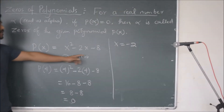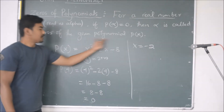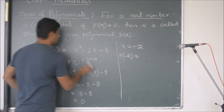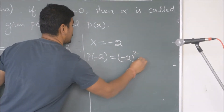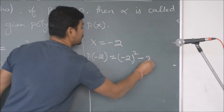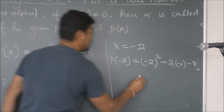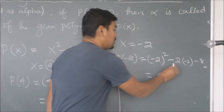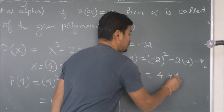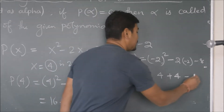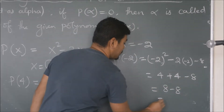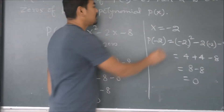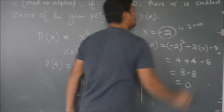Let us check another value, x equals minus 2. I am going to replace x by minus 2 and check whether the polynomial equals 0. p(minus 2) equals (minus 2) squared minus 2 times (minus 2) minus 8. That gives 4 plus 4 minus 8, which equals 0. So this time also the value of the polynomial reduces to 0, meaning minus 2 is also a zero of the given polynomial.